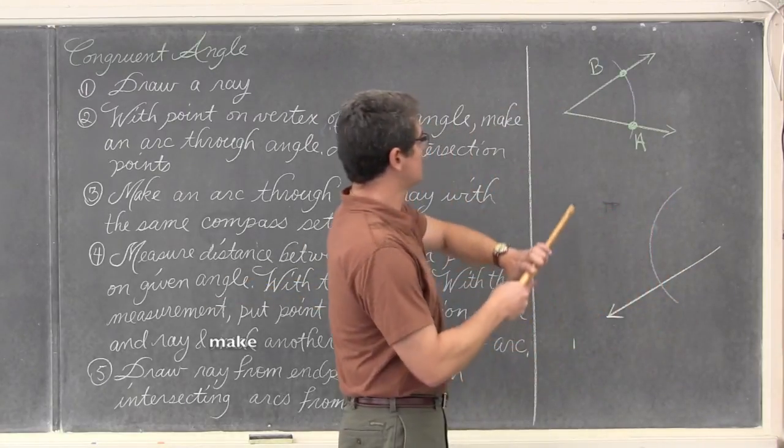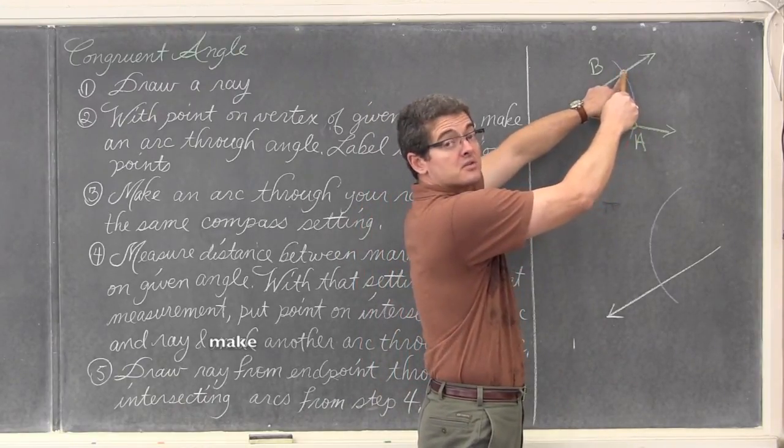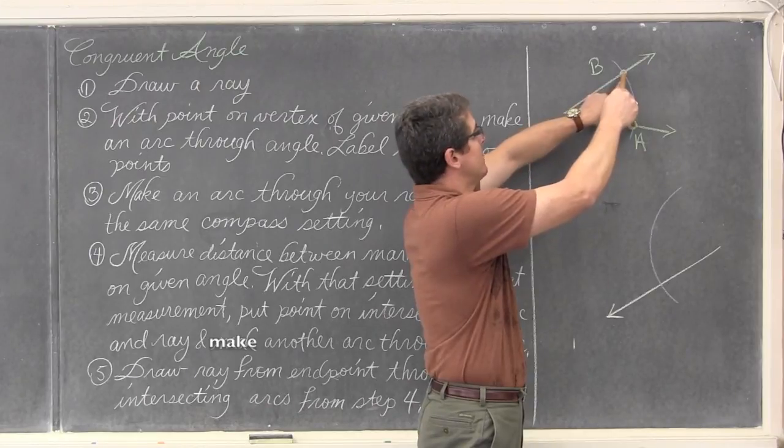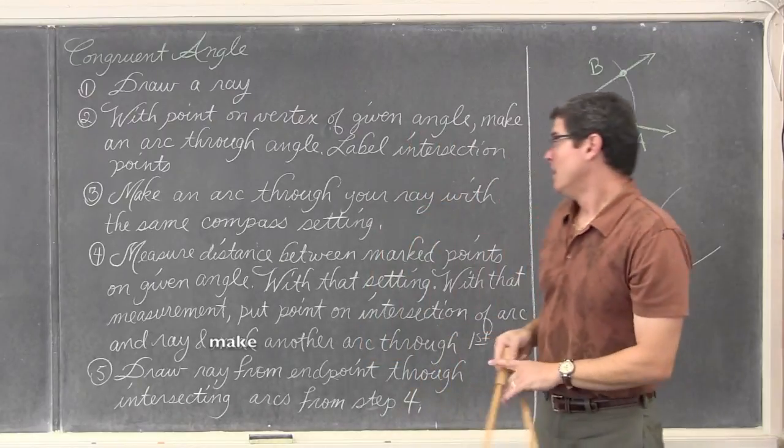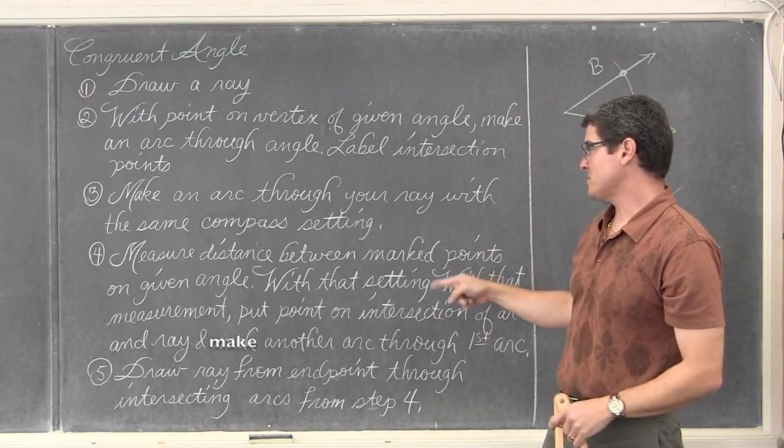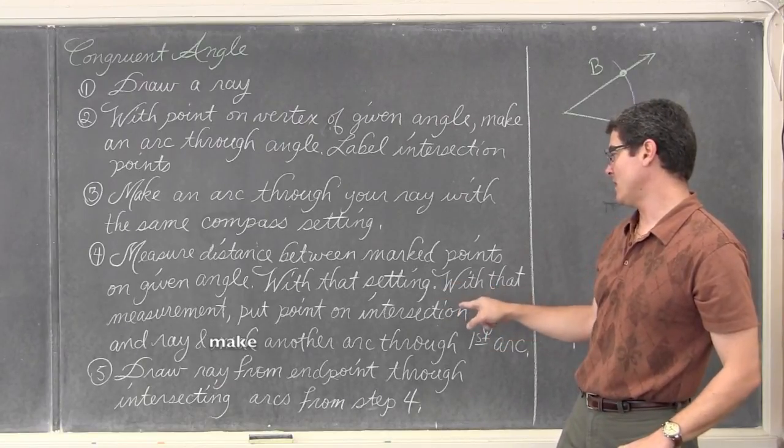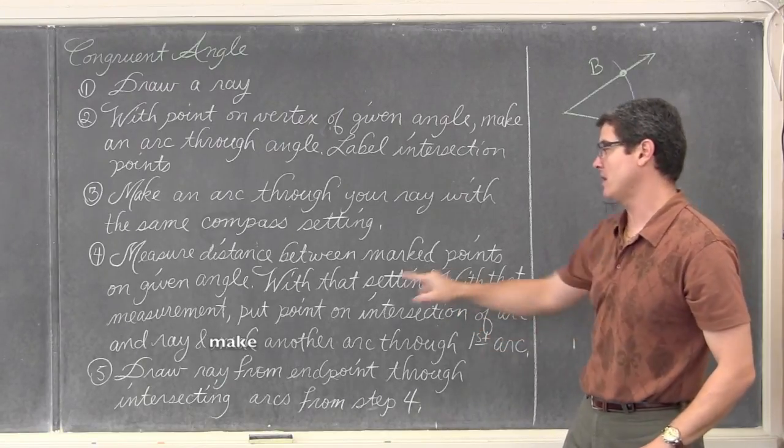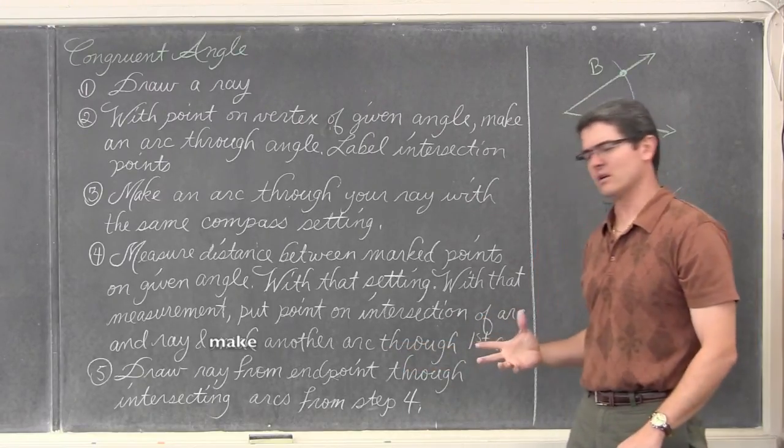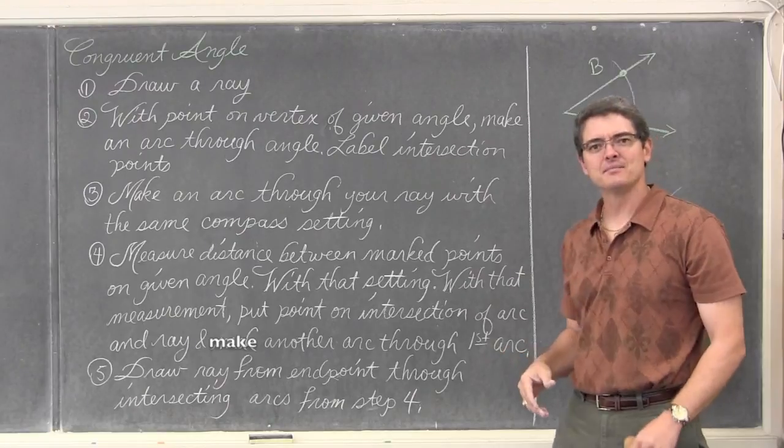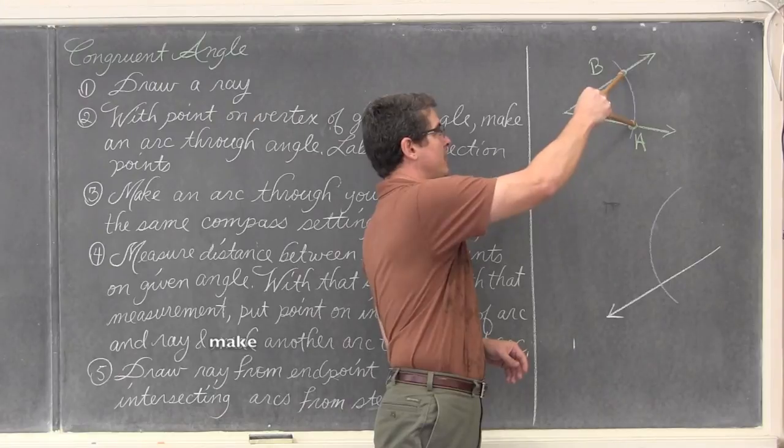Make an arc through the ray. Measure the distance between the marked points on your given angle. So in that case it would be A and B. Point where the arc intersects the other ray of your angle and measure that. Get it to be as equal as you can. That is pretty good. Measure the distance between the marked points in the given angle. With that setting, so don't move your compass, put the point on the intersection of the arc and ray and make another arc through the first arc.